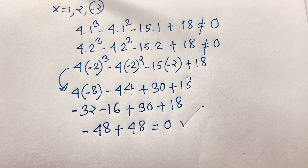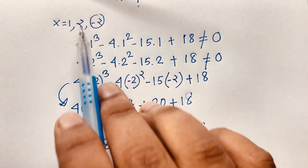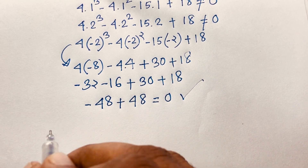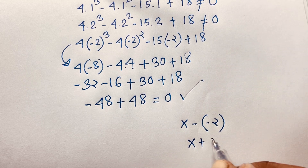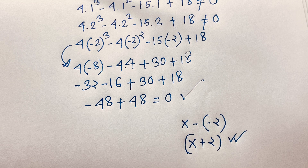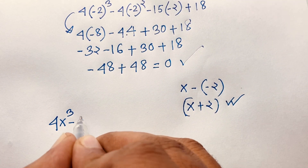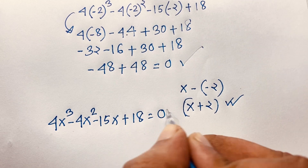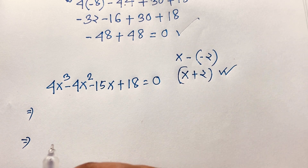Since x equals −2 satisfies the equation, (x + 2) is one factor of this cubic equation. Our equation 4x³ − 4x² − 15x + 18 = 0 can now be factored using (x + 2). We proceed to divide the cubic polynomial by this factor.